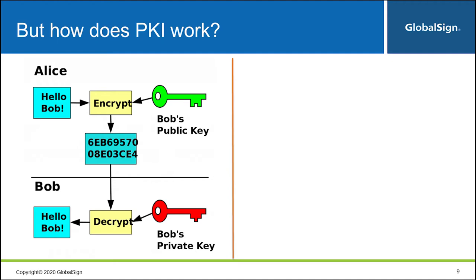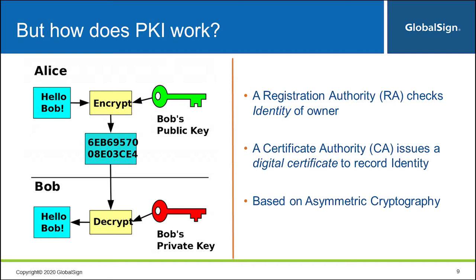This key distribution can be done in various ways and is often facilitated by applications — for example, if we're talking about email encryption, it's facilitated by clients like Outlook. Once Alice has Bob's public key, she can use it to encrypt the message. Once she has encrypted the message, it becomes unreadable for anyone in the world except for the owner of Bob's private key. So in short, whatever is encrypted by Bob's public key can only be decrypted by Bob's private key. Once the message is encrypted, she can send it, and no one can read it except Bob, who will decrypt it with his private key.